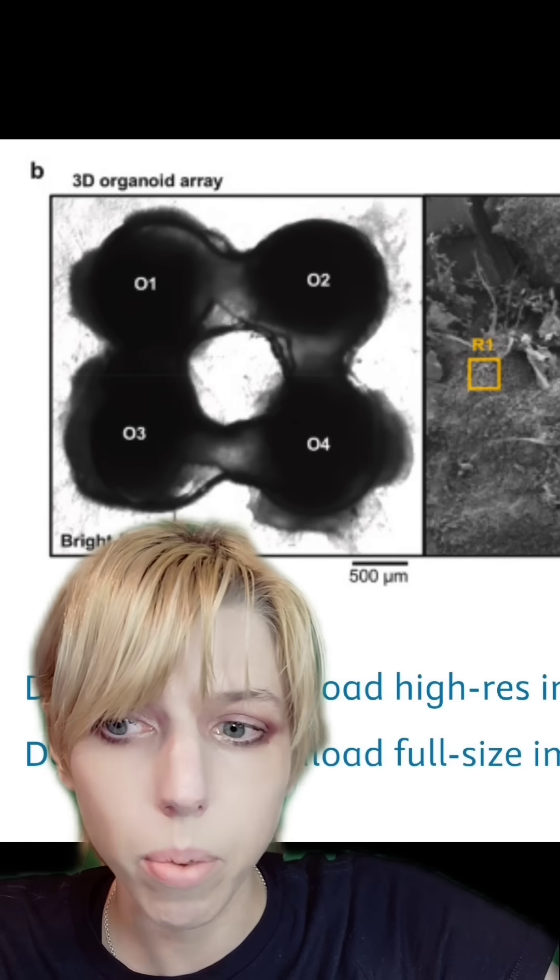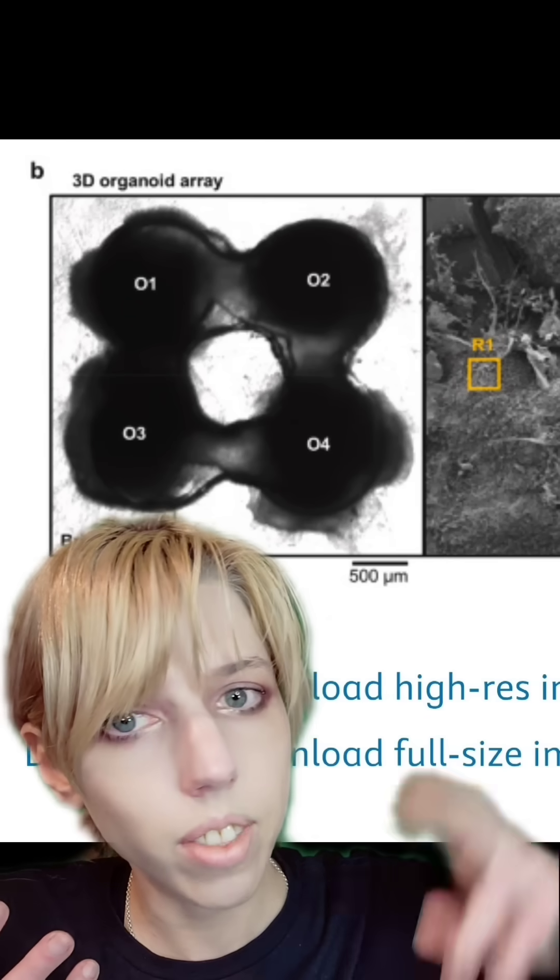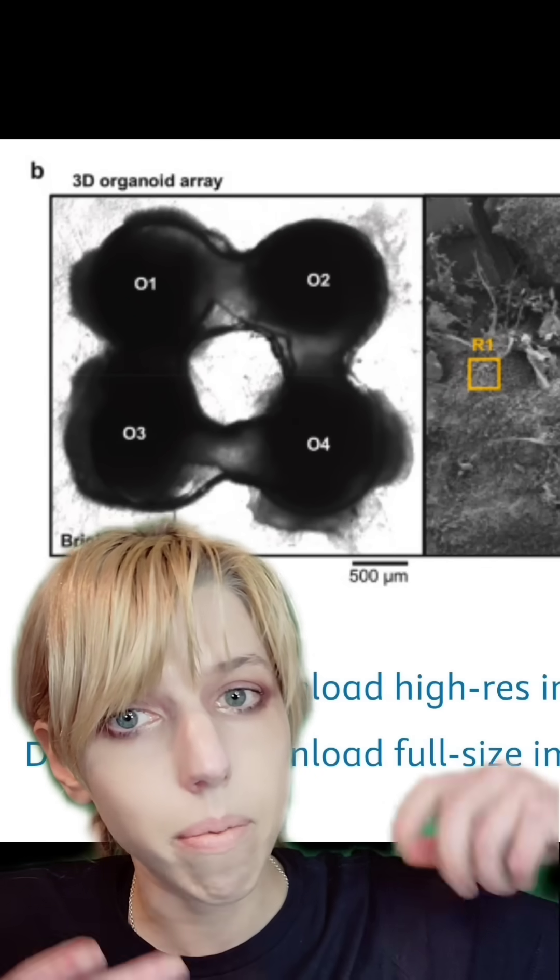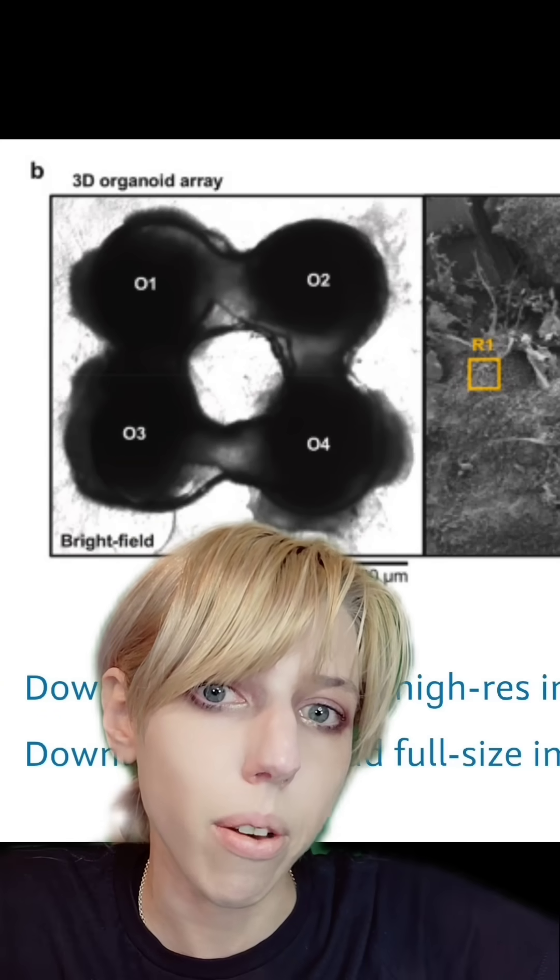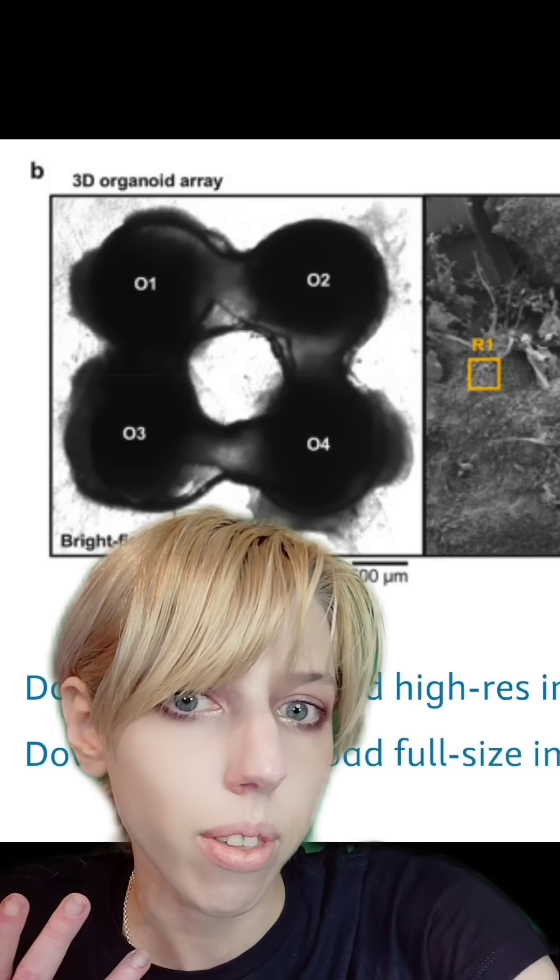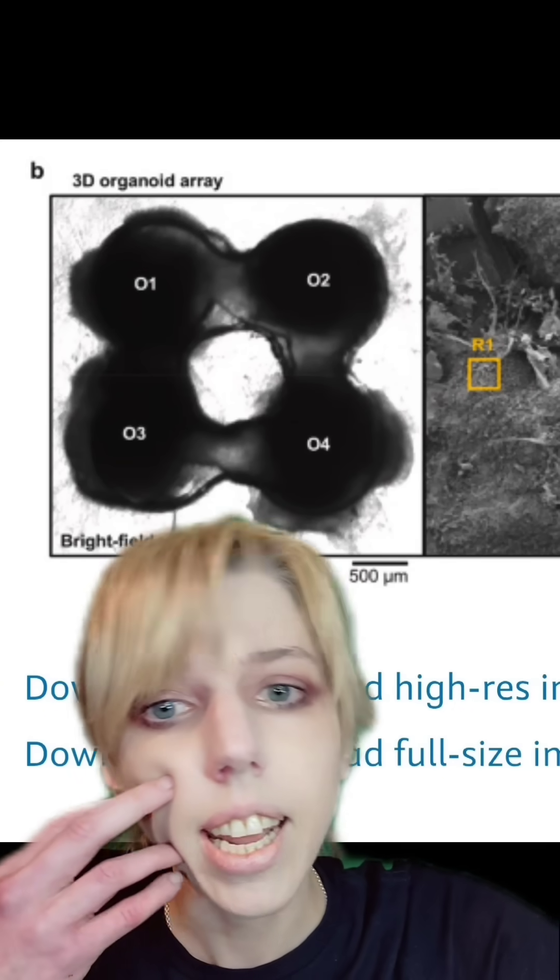We've seen examples where you took a brain organoid, grew it near the decapitated spine of a mouse, and it made projections and can even take control of the muscles of the mouse that is no longer a mouse. They have no problem hybridizing with anything.